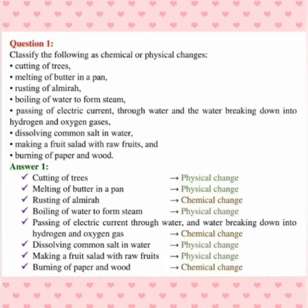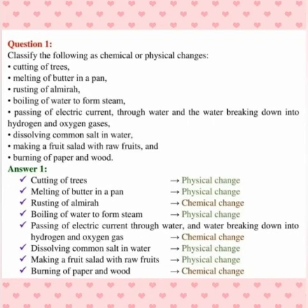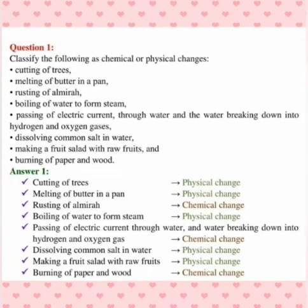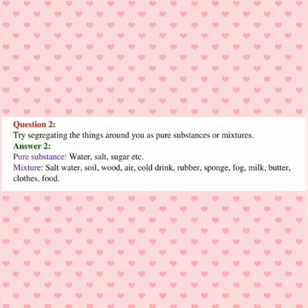Last question is based on the physical as well as chemical change. We have learnt that physical and chemical change. Physical jahan pe naya substance nahi milta hai, chemical jahan pe milta hai. You can see the particular change classification that already we have discussed in the explanation part. I have just written the answer you can go through it. Cutting of tree, physical change, melting of butter, physical change, rusting of almira, chemical change, boiling of water that is physical change. That is all about physical and chemical change children.